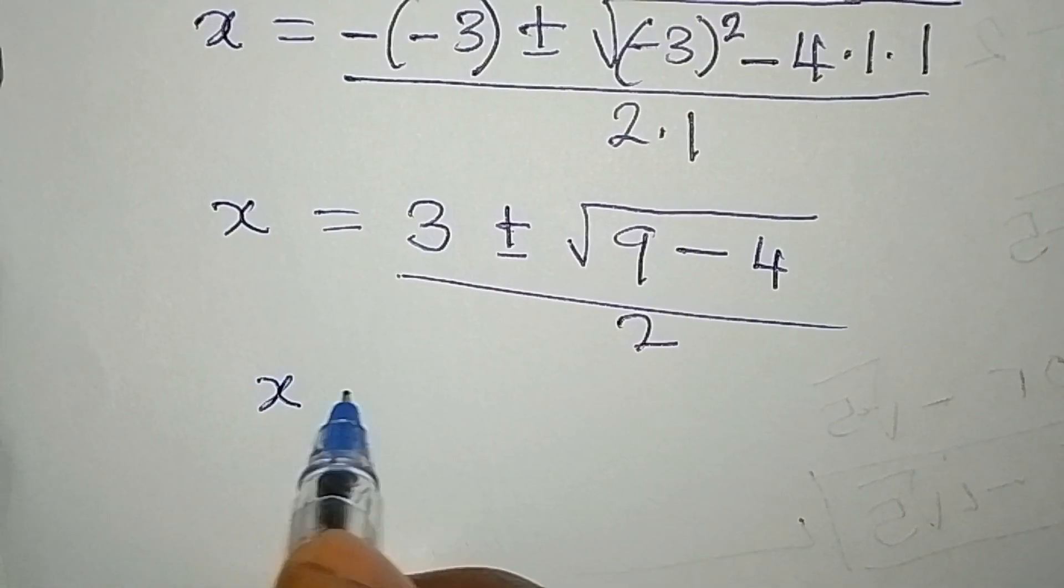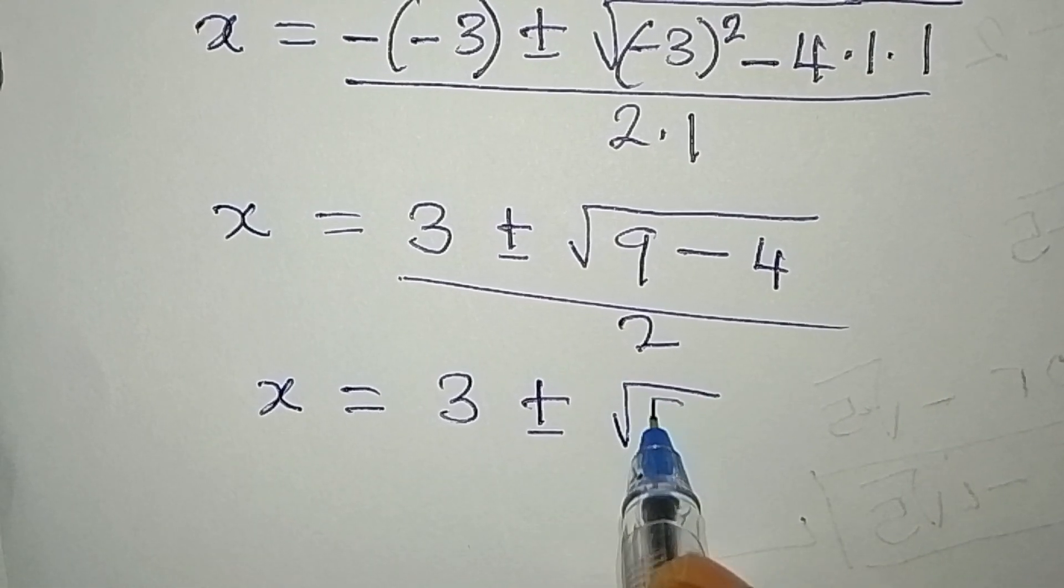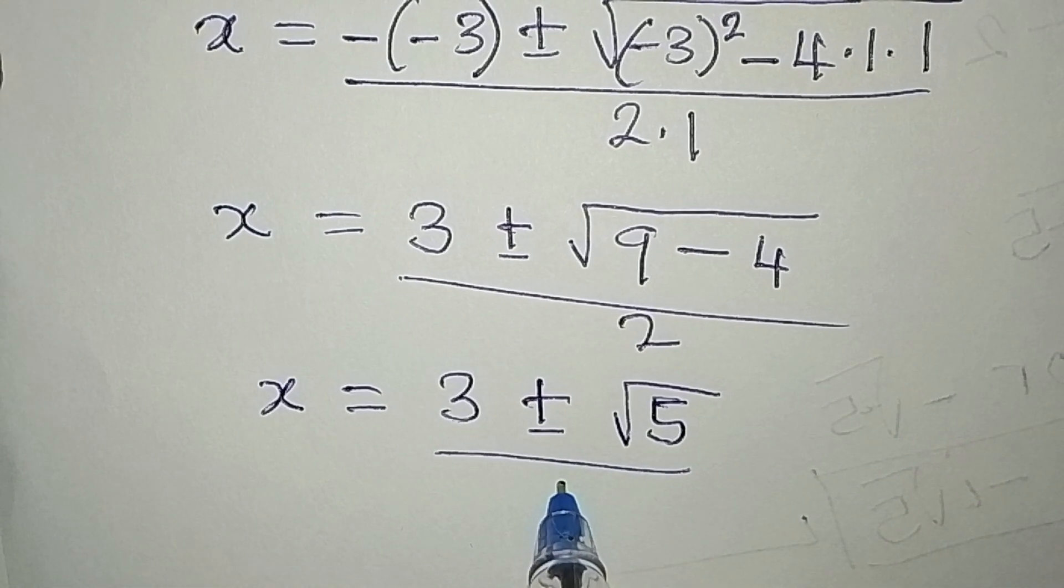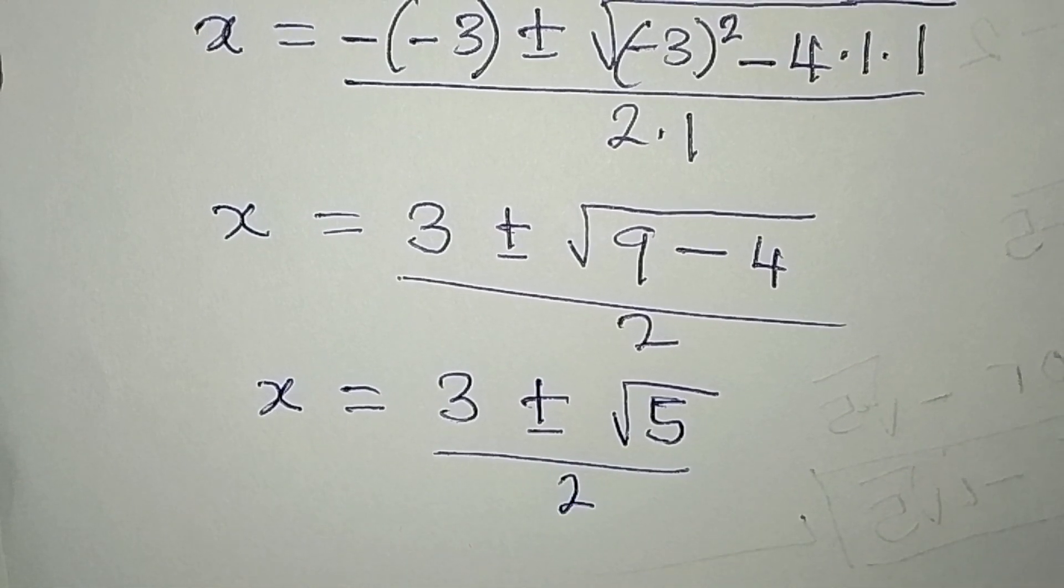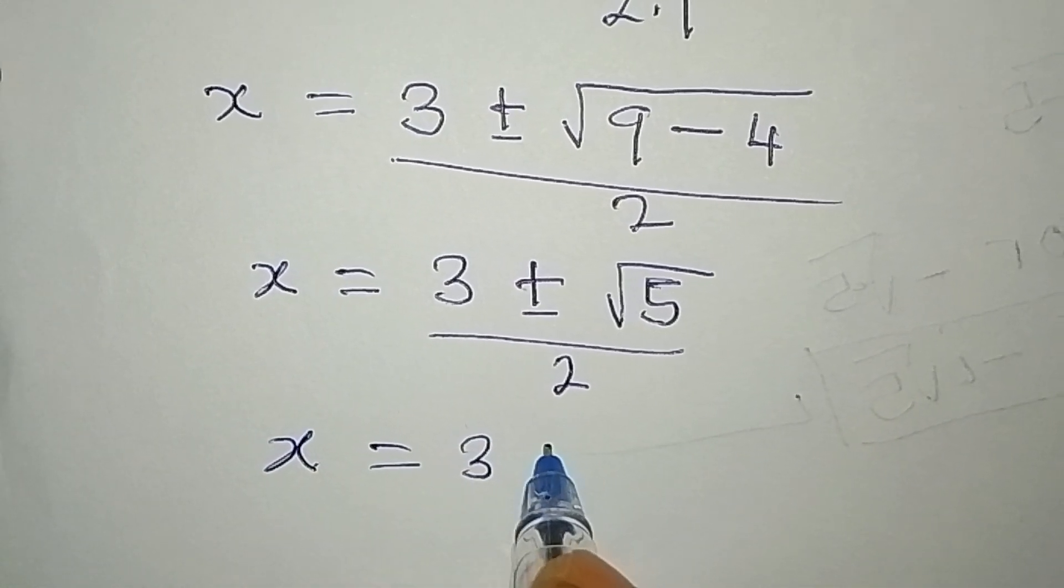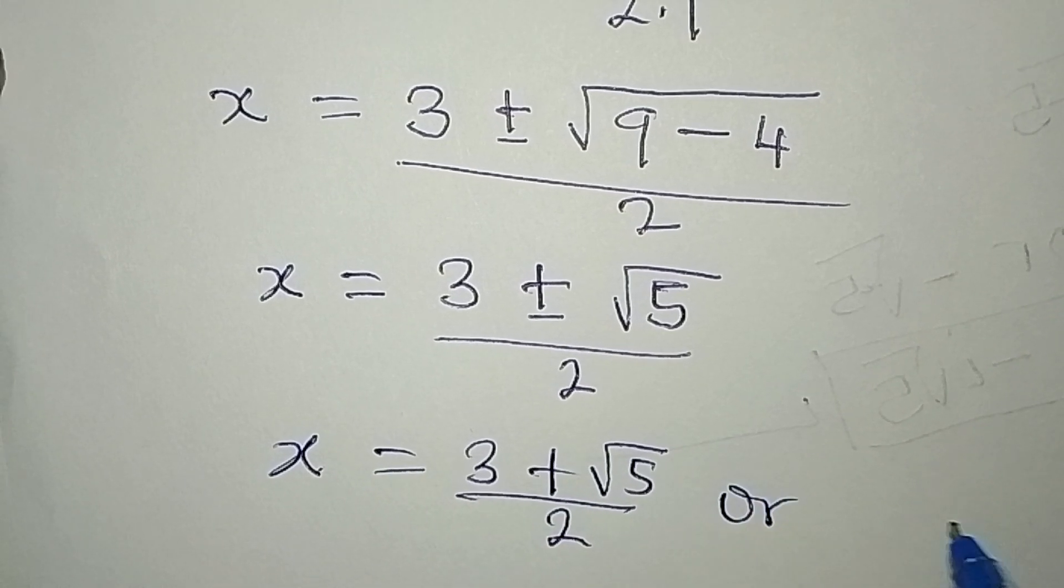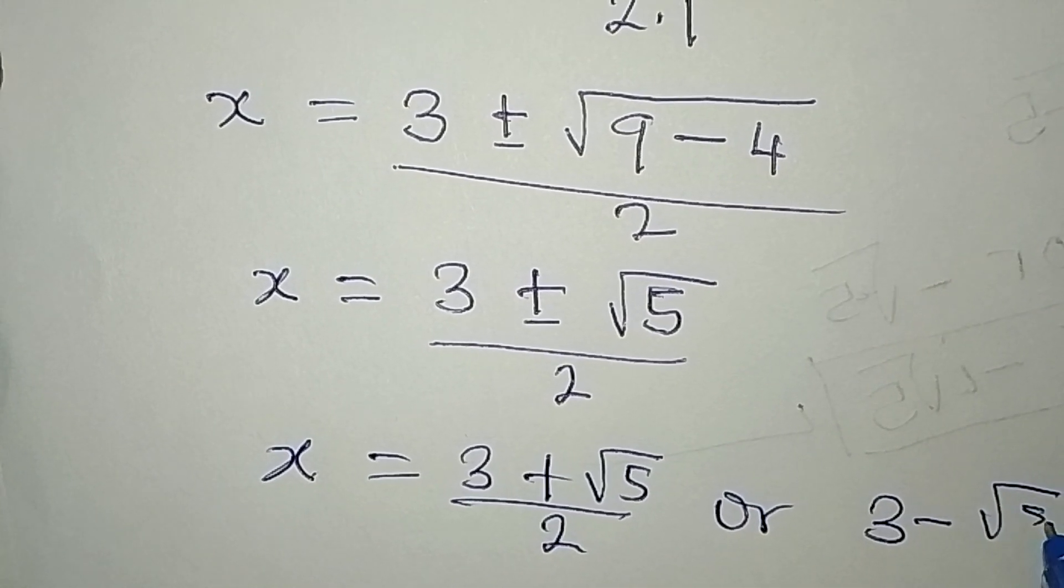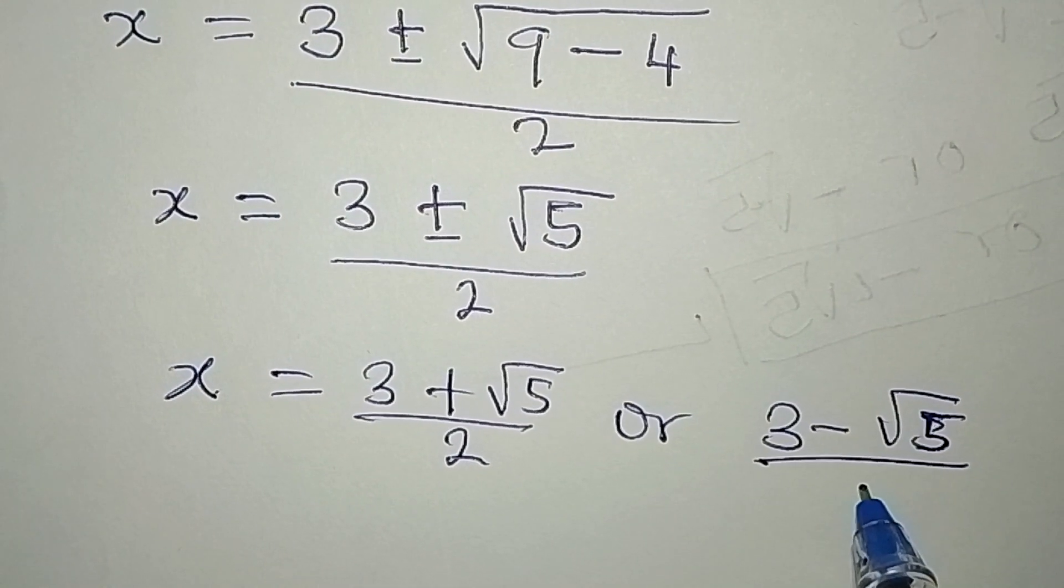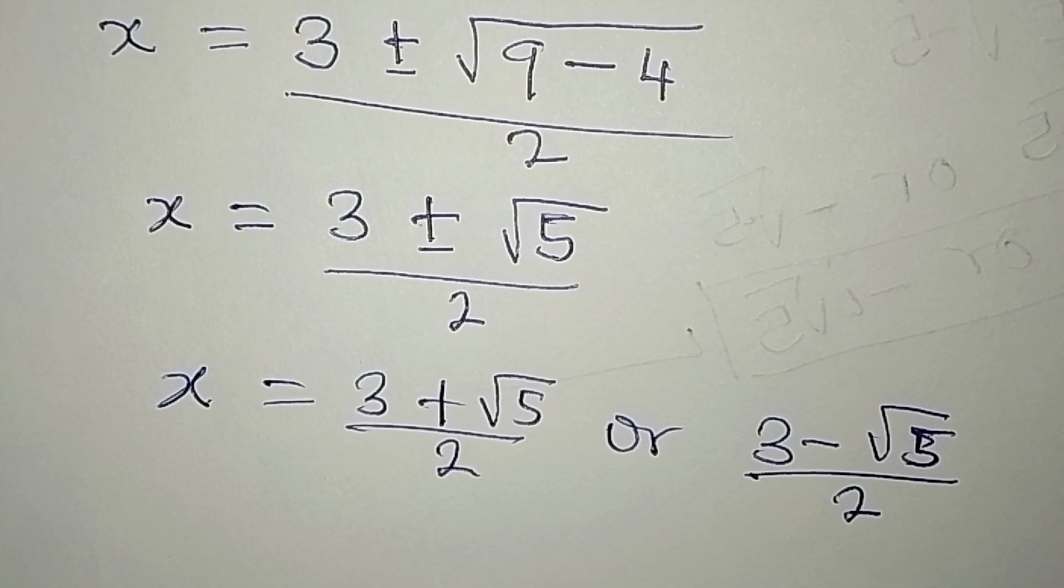To continue, we have x that will be equal to 3 plus or minus square root of 5. 9 minus 4 is 5. And that will be over 2. To continue, then we have x to be equal to 3 plus square root of 5 over 2. Or 3 minus square root of 5 over 2. So these are the two solutions to the problem.